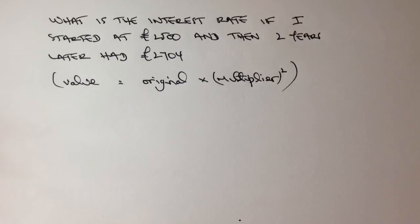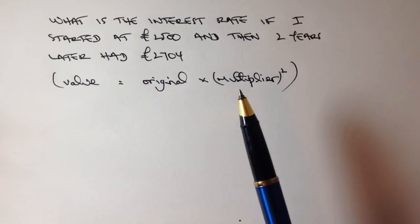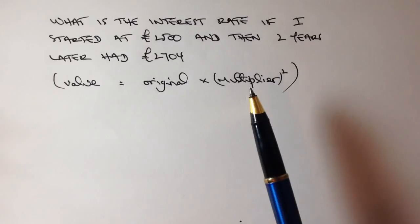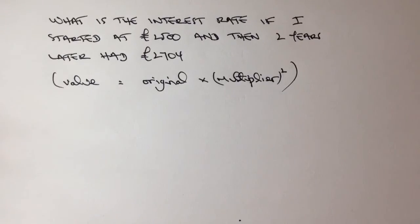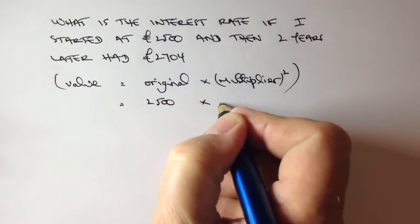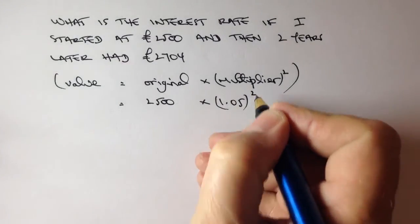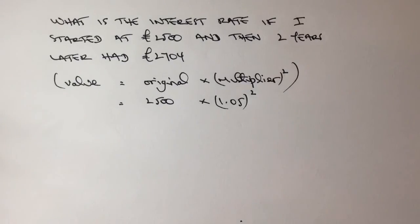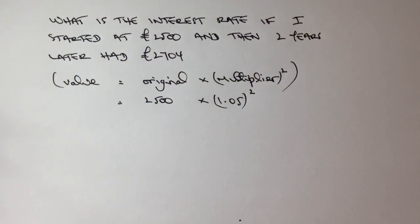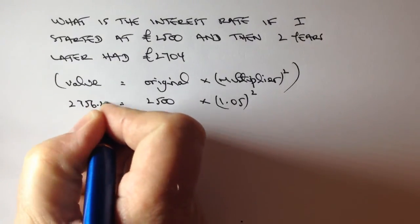OK, so with this particular question it would be relatively straightforward if we knew what the multiplier was, and that's actually what this question is asking. Because if the interest rate, let's say, had been 5%, then this multiplier would have been 1.05, and we would have simply put this into the equation and said, well, the original is £2,500, and if it had been 5% it would have been 1.05 squared. And if we'd put that into our calculator, it would have worked out that that particular value came out at something like 2,756.25. So actually, it's not 5% in this question.